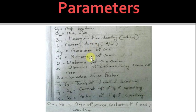D is the distance between core center, small d is the diameter of circumscribing circle of core, k_w is window space factor, T_p and T_s are turns of primary and secondary winding, A_p and A_s are area of cross section of primary and secondary winding.